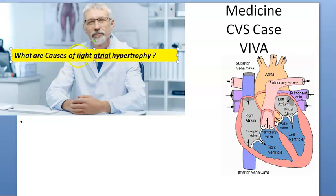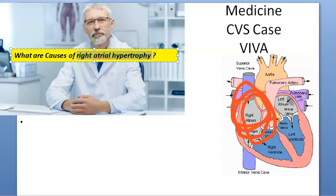What are the causes of right atrial hypertrophy? Right atrial hypertrophy means the right atrium has to work more. So if the right atrium has to work more, there should be some problem with the tricuspid valve — tricuspid stenosis will be the main cause of right atrial hypertrophy.